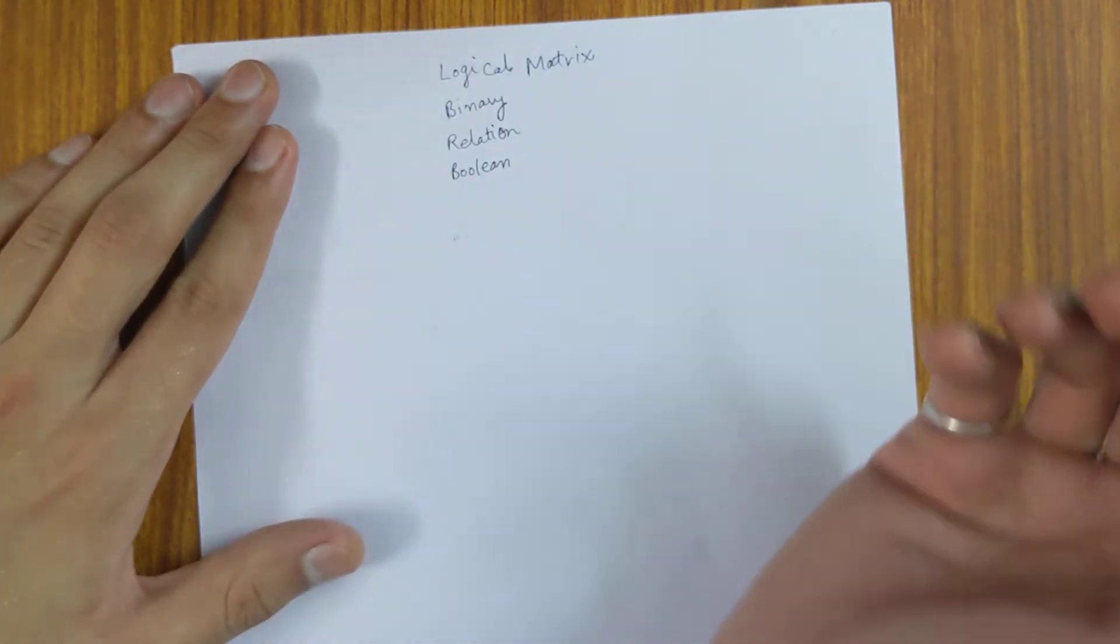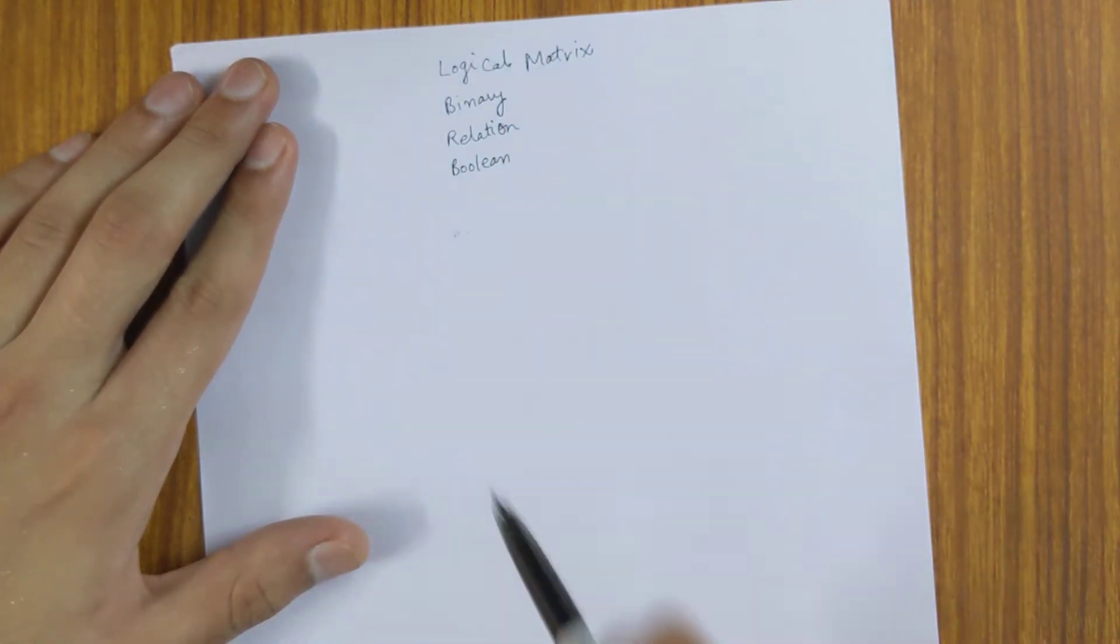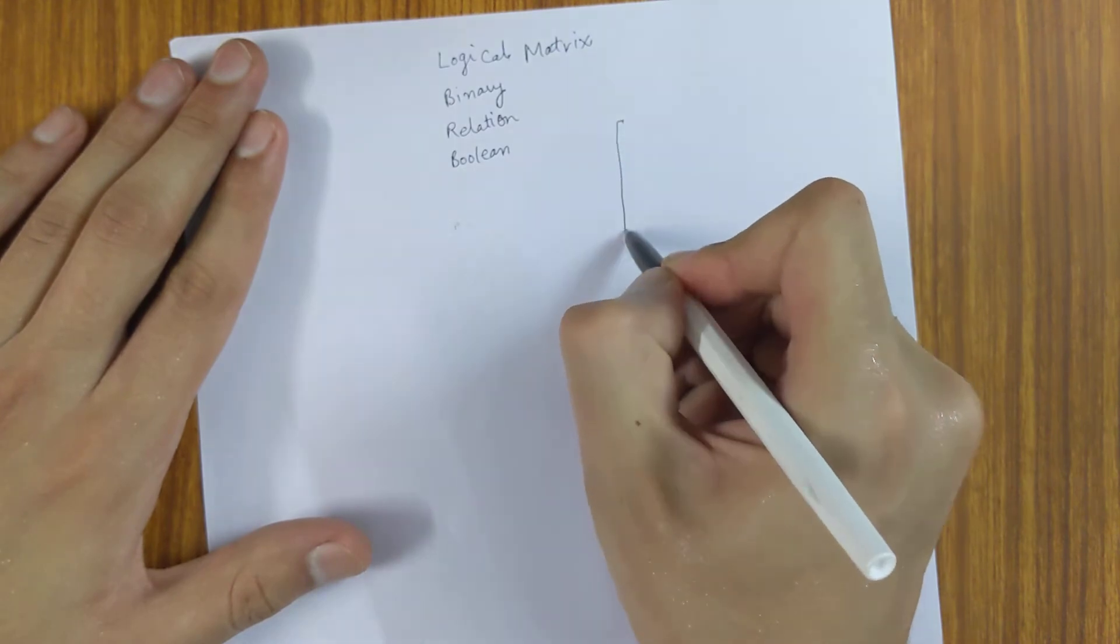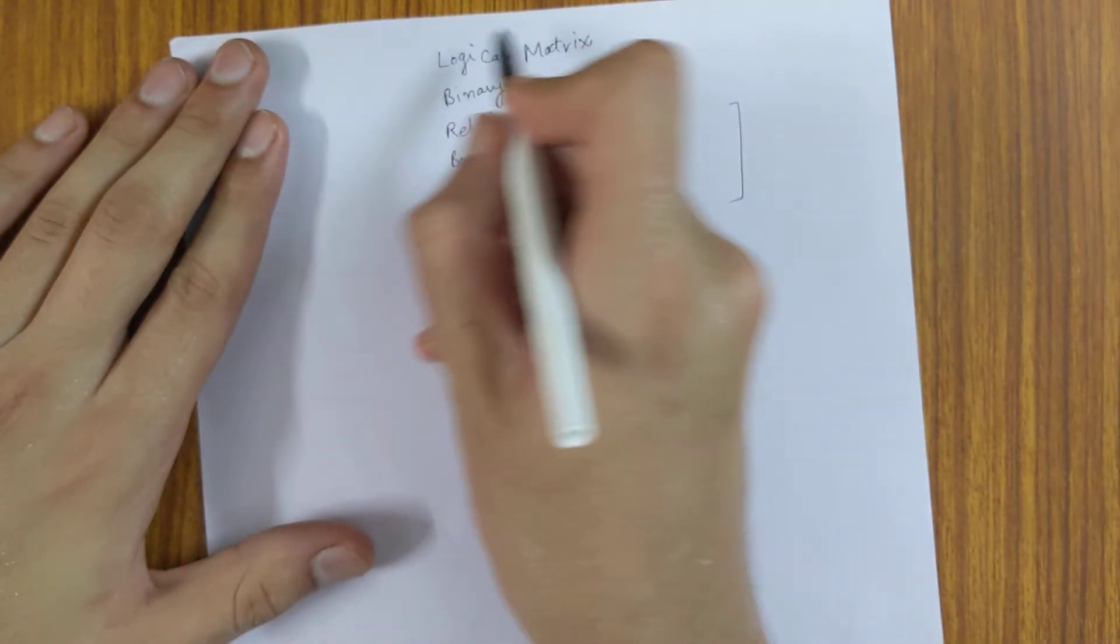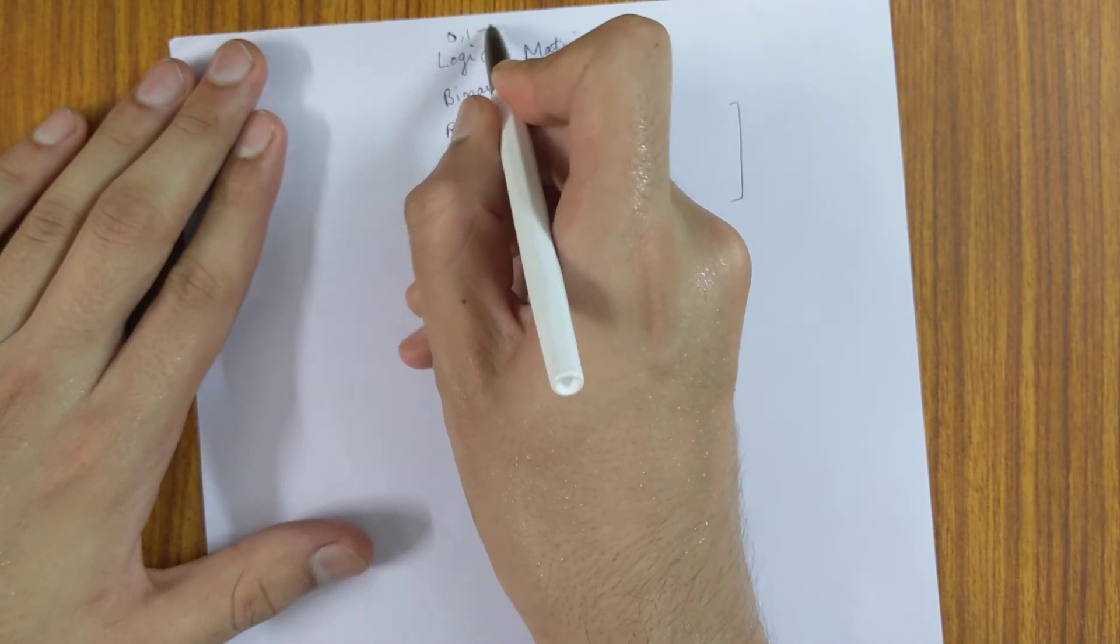So basically, logical or boolean, why? Because all of its elements can take zero or one values, so it's also known as zero one matrix.